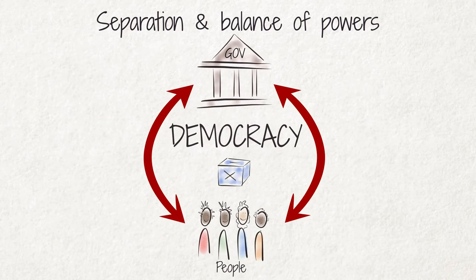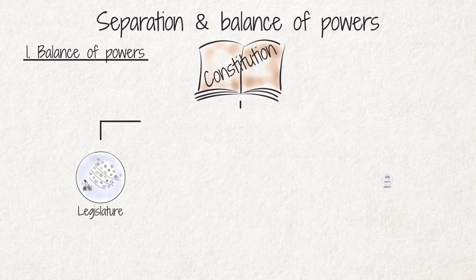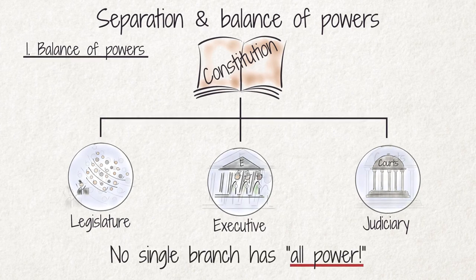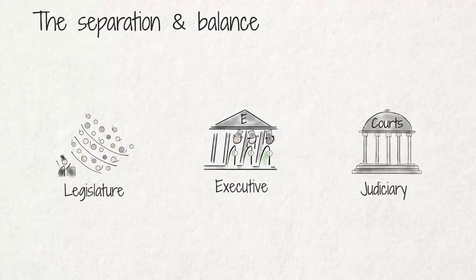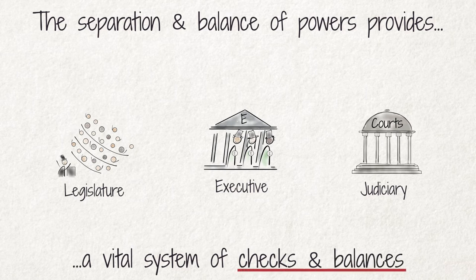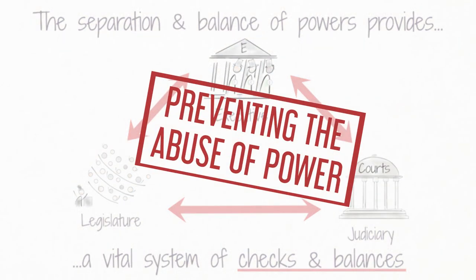Democracies are not only characterized by the separation, but also by the balance of powers. Balance aims to ensure that no single branch of government has all power. In other words, the separation and balance of powers provides a vital system of checks and balances. The three branches control each other and ensure that power is shared. The main purpose is to prevent the abuse of power.